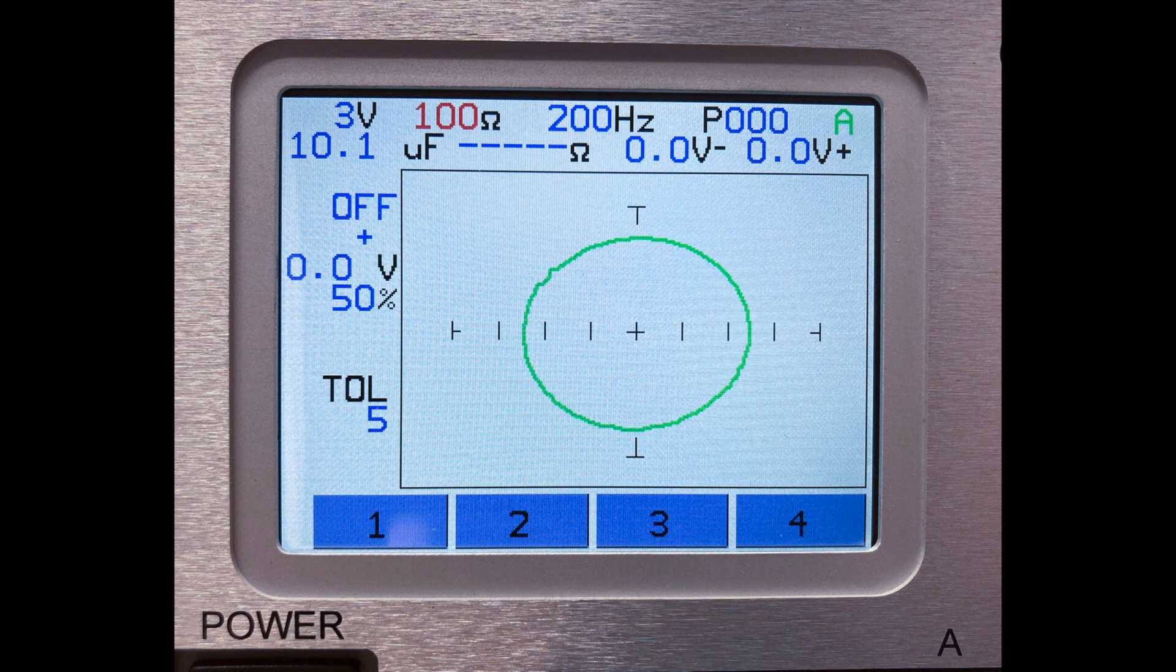The elliptical shape of a capacitive signature occurs because of the component's reactance to the tracker's AC signal. This is known as capacitive reactance, where the nature of a capacitor to hold a charge causes a phase shift between current and voltage.